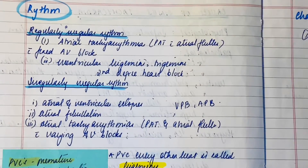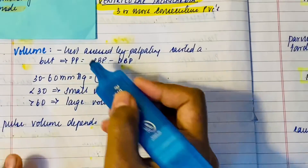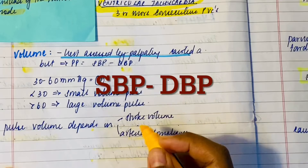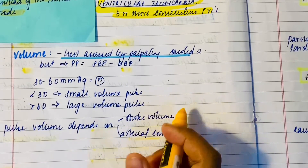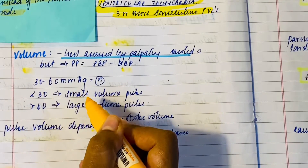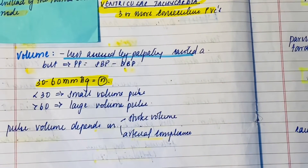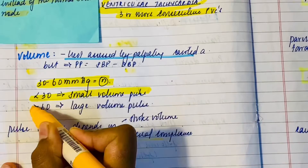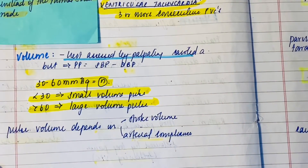Volume is best assessed by palpating the carotid artery. Pulse pressure is basically the difference between systolic blood pressure and diastolic blood pressure. 30 to 60 mmHg is considered normal pulse pressure; less than 30 is a small volume pulse and more than 60 is a large volume pulse.